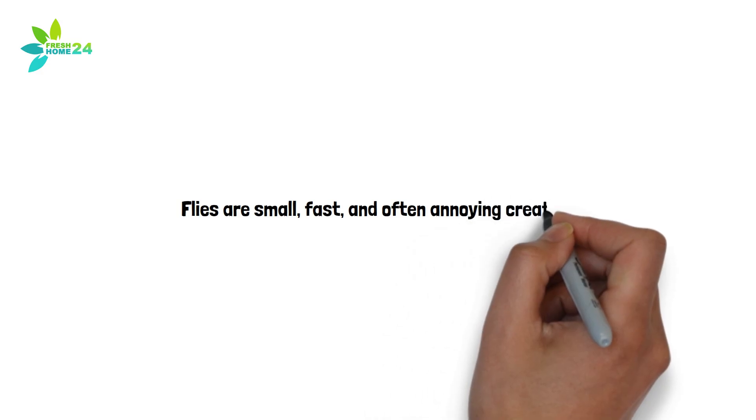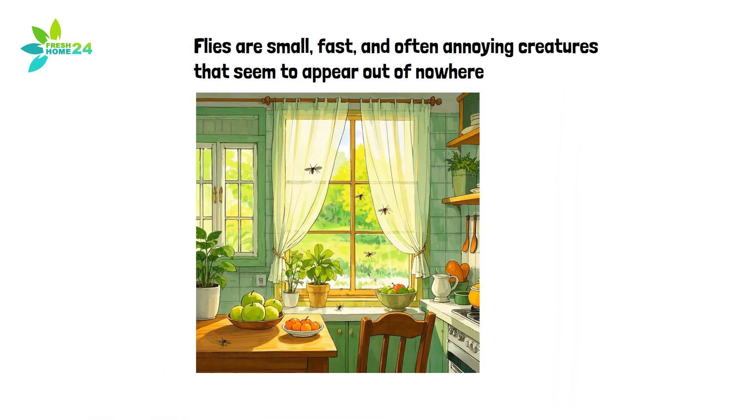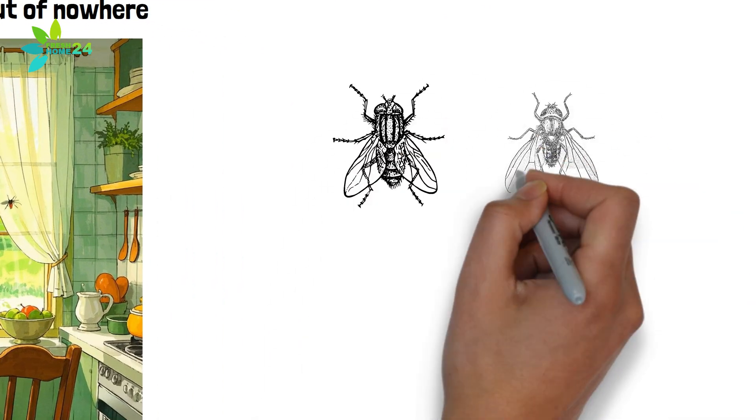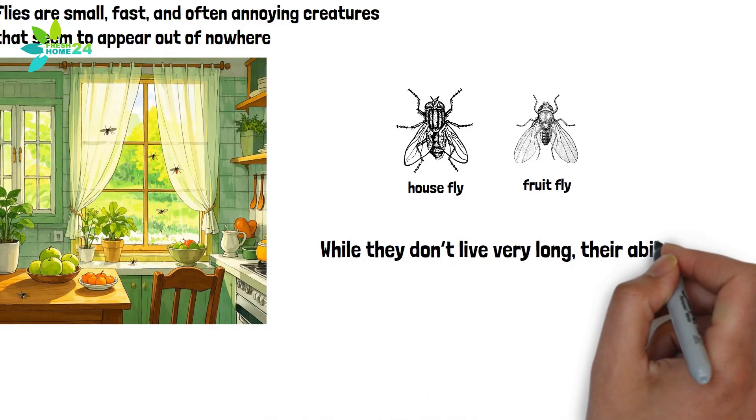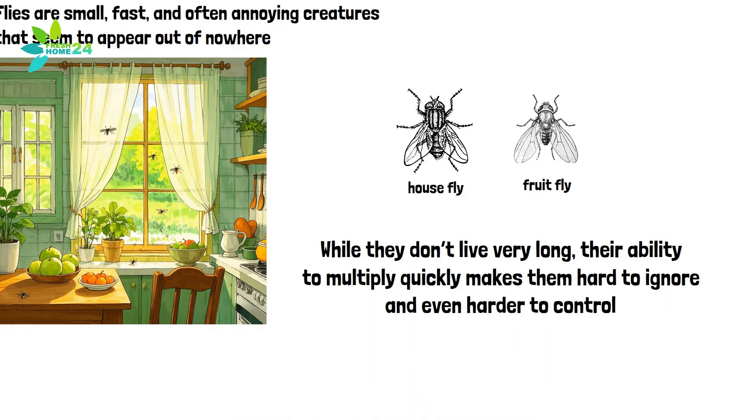Flies are small, fast, and often annoying creatures that seem to appear out of nowhere, especially during warmer months. Two of the most common types you'll see around your home are the housefly and the fruit fly. While they don't live very long, their ability to multiply quickly makes them hard to ignore and even harder to control.